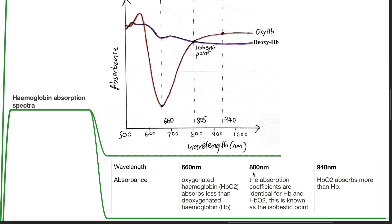At 800 nm wavelength, the absorption coefficients are identical for oxyhemoglobin and deoxyhemoglobin, and this is known as the isobestic point.